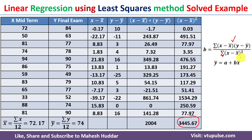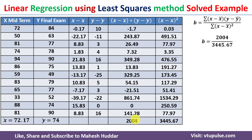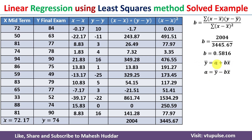We have now calculated both the numerator and denominator. Putting numerator 2004 over denominator 3445.67, we get b equal to 0.5816. To calculate a, we rearrange the equation: a equals mean of y minus b times mean of x. Mean of y is 74, mean of x is 72.17, and b is 0.5816.